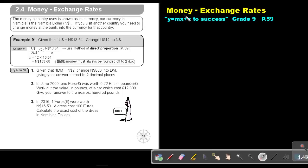Part 7: Money - Exchange Rates. You will find this on page 59 in the Namibia Mathematics Grade 9 textbook, Y equals immexplicit to success.